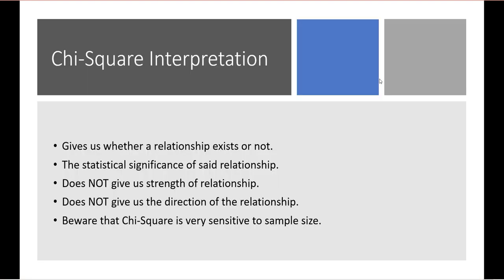Chi-square tells us whether a relationship exists and its statistical significance. However, it does not give us the strength of the relationship — how much the independent variable is affecting the dependent variable — nor does it give us the direction of that relationship. Additionally, chi-square is very sensitive to sample size, so larger samples can produce significance even when the strength of a relationship is very low.